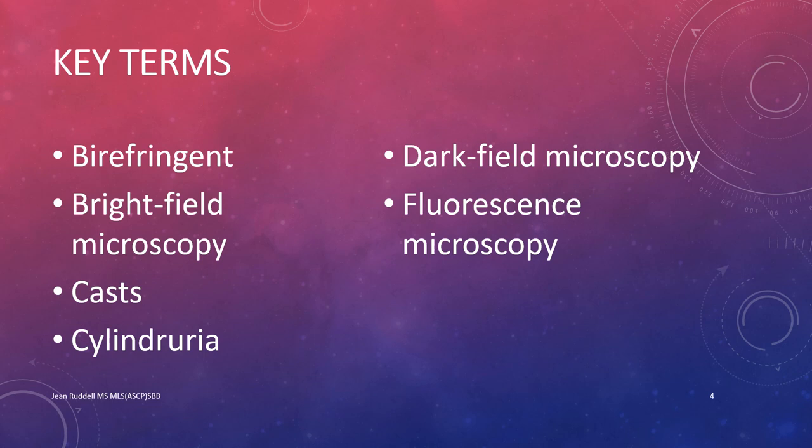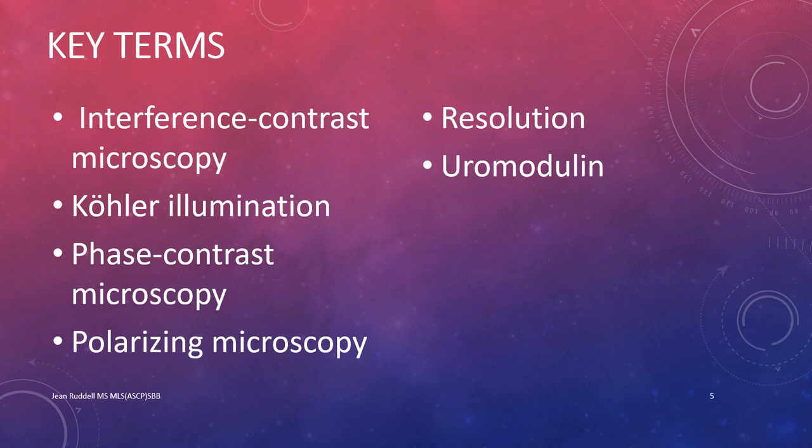Key terms you should understand as a laboratory technician or scientist include: birefringent, bright field microscopy, cast, cylinduria, dark field microscopy, fluorescence microscopy, interference contrast microscopy, Kohler illumination, phase contrast microscopy, polarizing microscopy, resolution, and uromodulin.